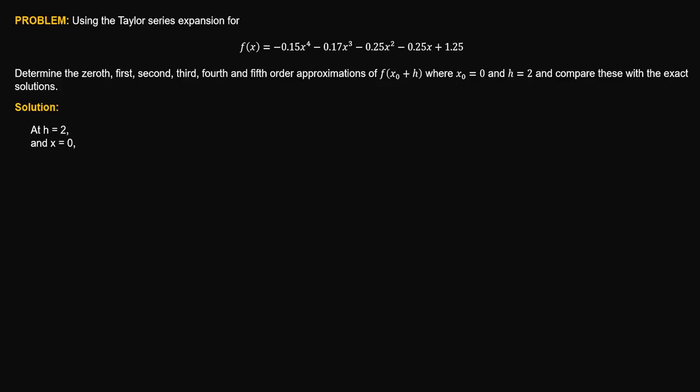We are interested in the function value at 2. Let's first compute the first derivative of the function at x = 0. Since the function is just a polynomial, we use the power formula. The first derivative is equal to negative 4(0.15x³) minus 3(0.17x²) minus 2(0.25x) minus 0.25. Evaluating at x = 0, the first derivative is equal to negative 0.25.